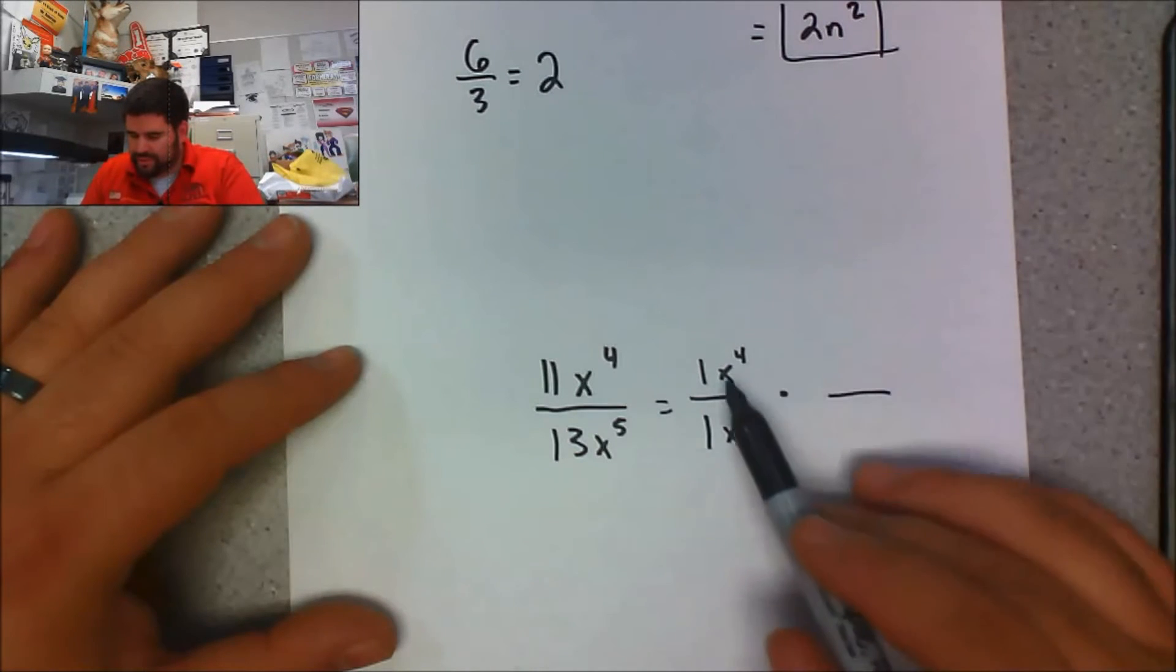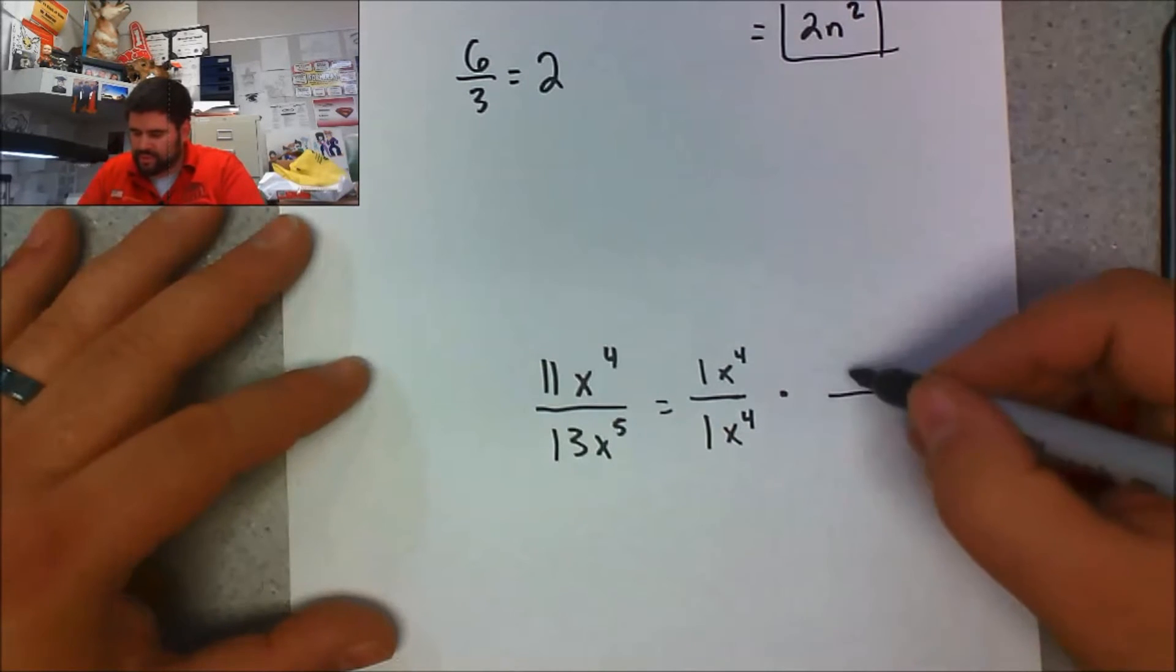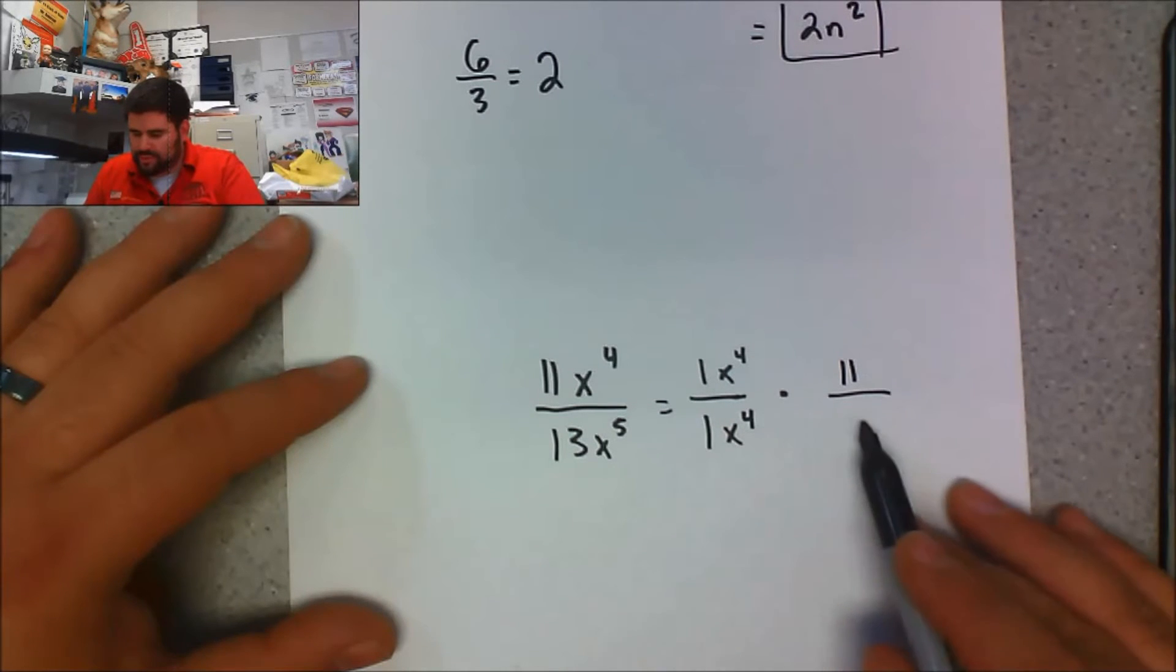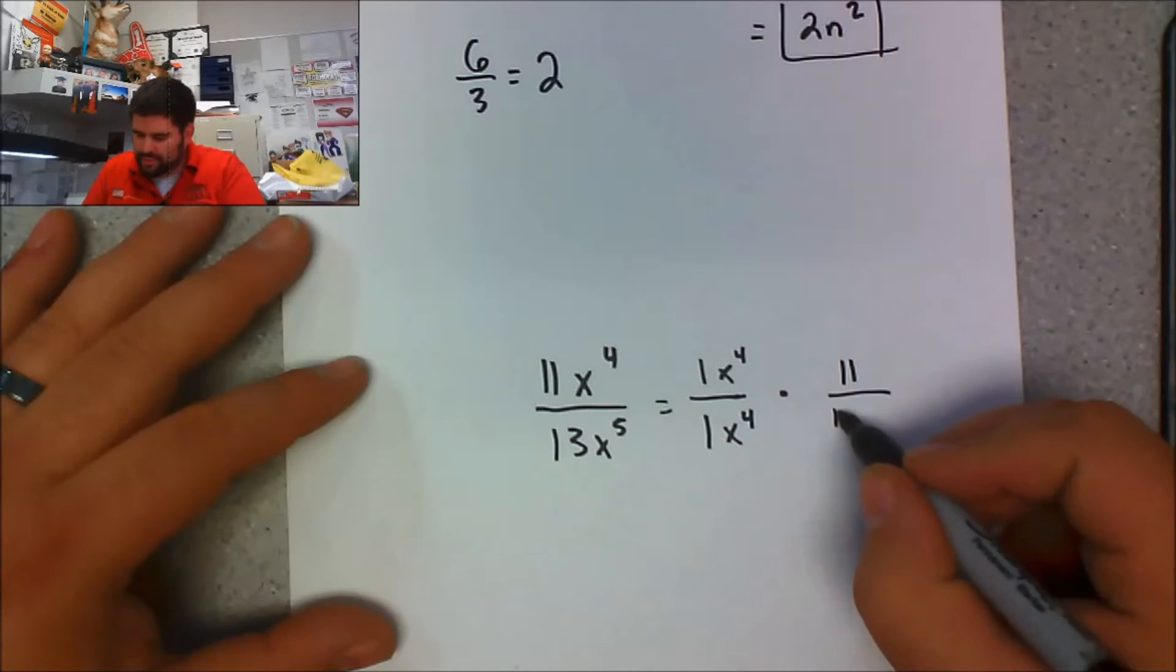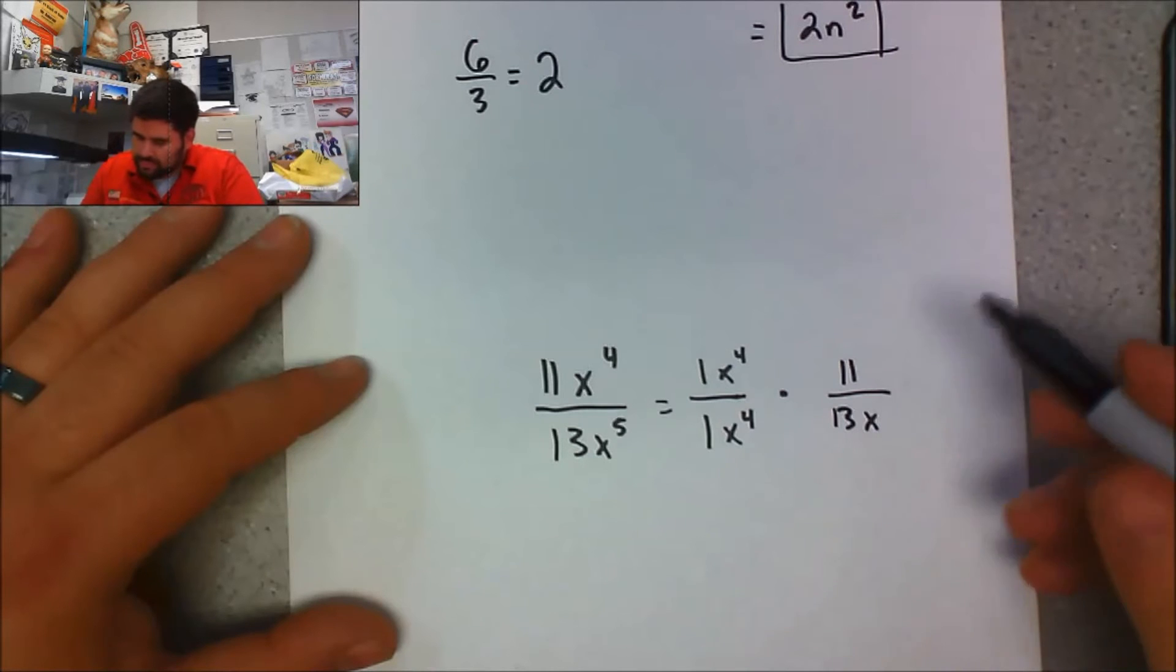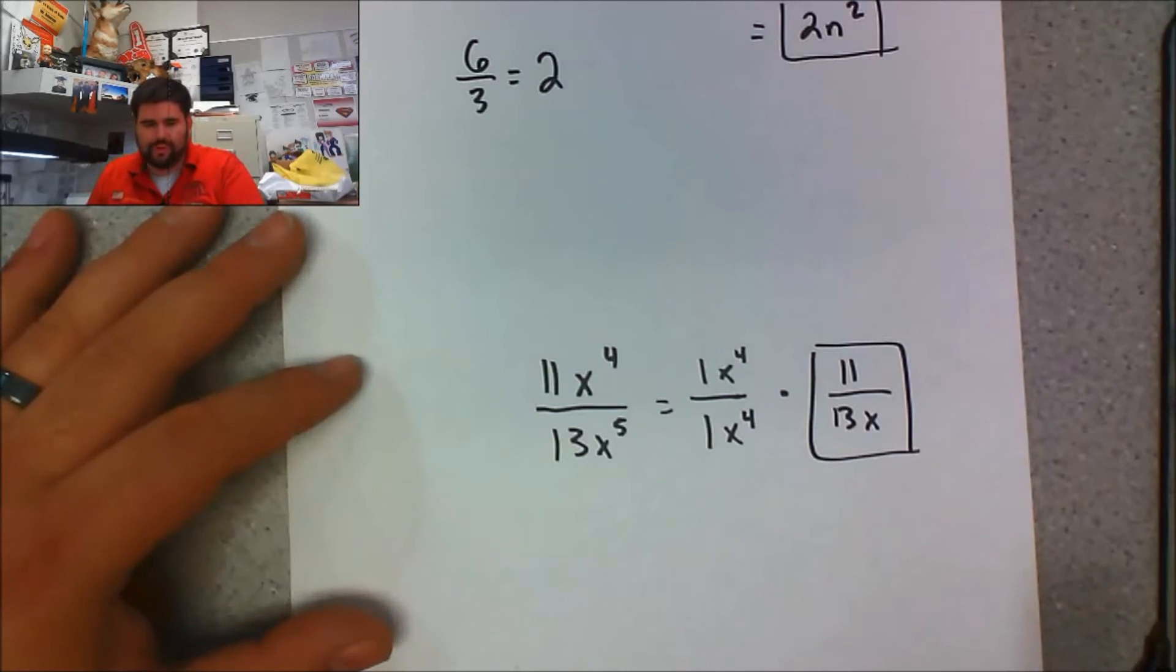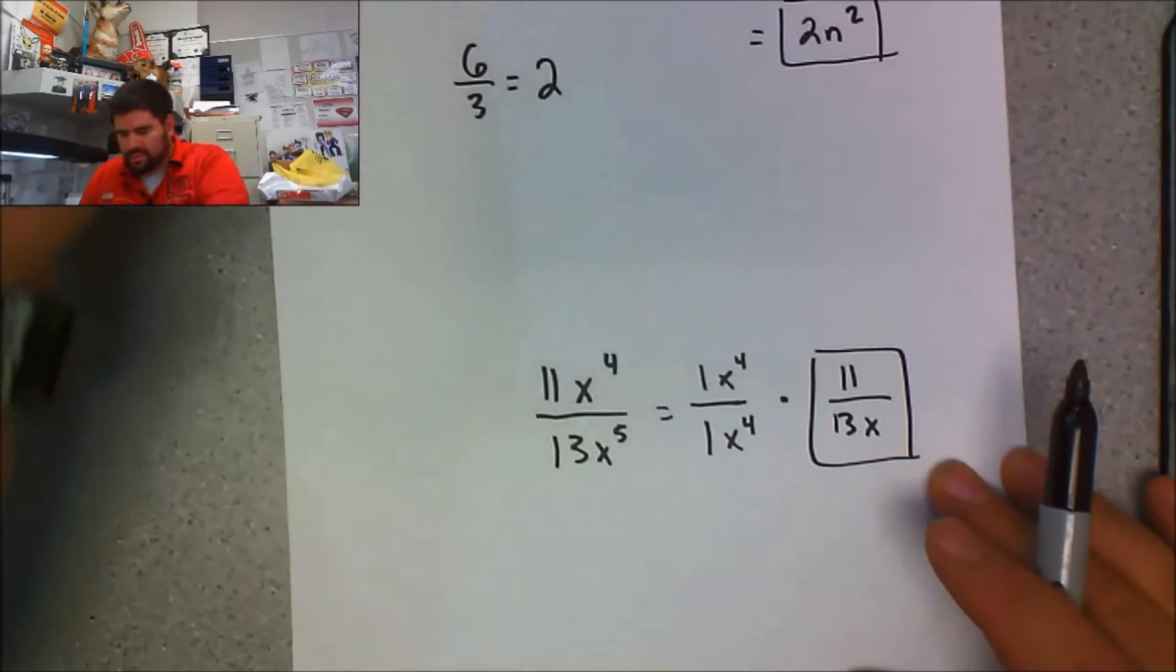So on top, x to the 4th times what equals 11x to the 4th? Well, I know that's 11. On the bottom, I need 13 and one more x. So this is your reduced form right there.